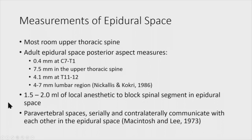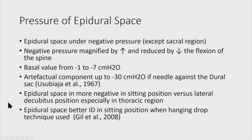Looking at the literature, it's about 1.5 to 2 mLs of local anesthetic to block a specific spinal segment in the epidural space. That's how we came up with needing to inject about 2 to 2.5 mLs of blood at each level. The perivertebral spaces, ipsilateral and contralateral, communicate with each other, so blood injected in the epidural space will communicate with both the left and right sides. The epidural space is under negative pressure except in the sacral region — that's very important.